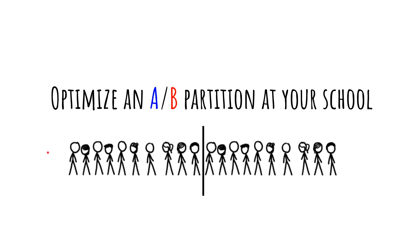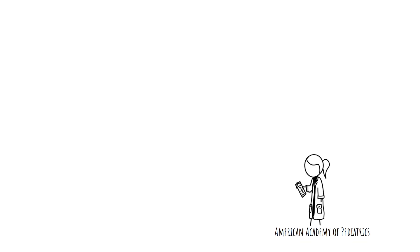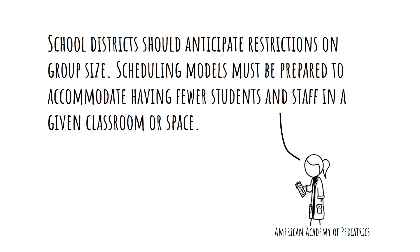Now while many students are just beginning their summer break, teachers and administrators are already busy planning for what school is going to look like in the fall. It's obviously too early to say exactly what a typical school day is going to look like, but we do know that we need to prepare for the possibility of having fewer students in each classroom with more space between student desks. A lot of schools are planning on partitioning students into an A group and a B group in order to comply with these recommendations.